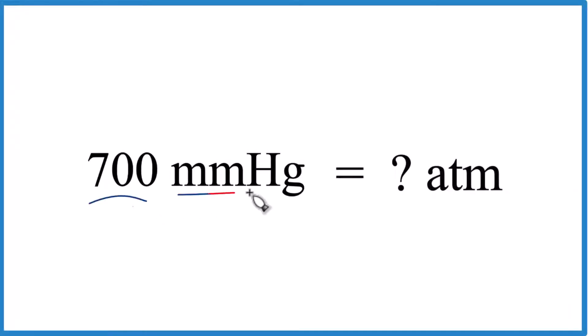Let's convert 700 millimeters of mercury to atmospheres. And here's how we can do that.